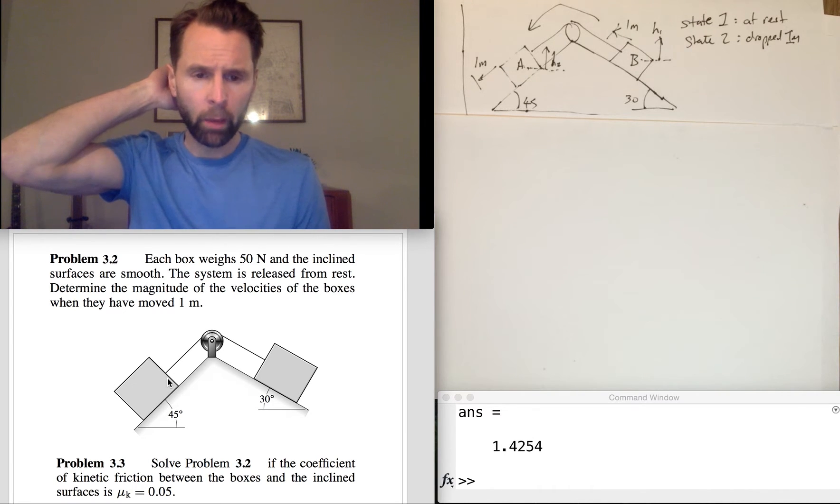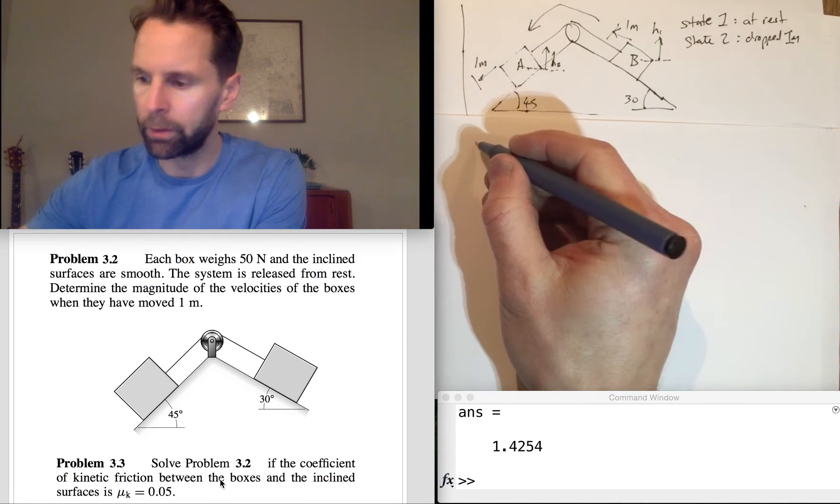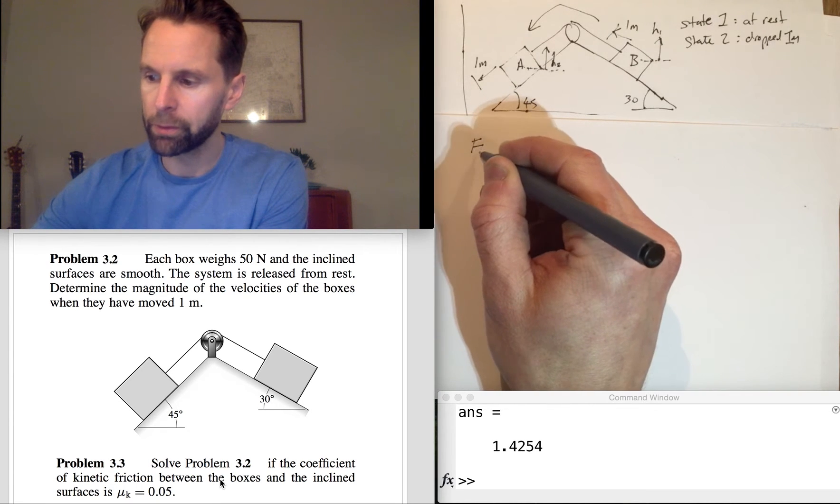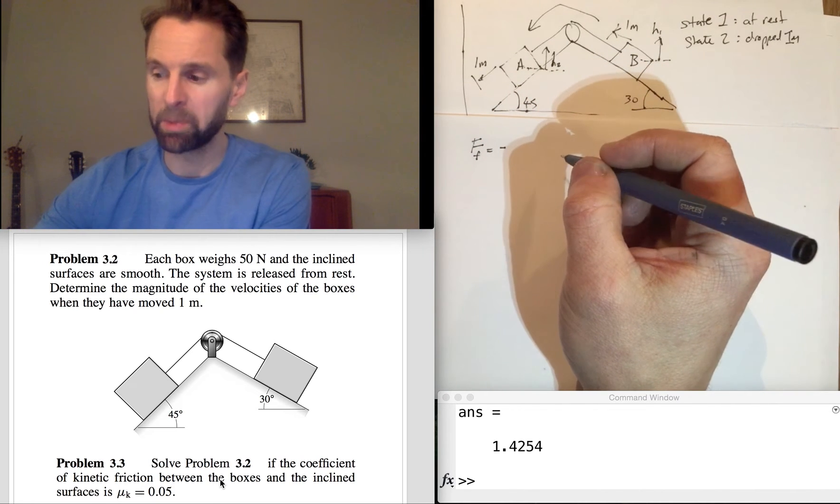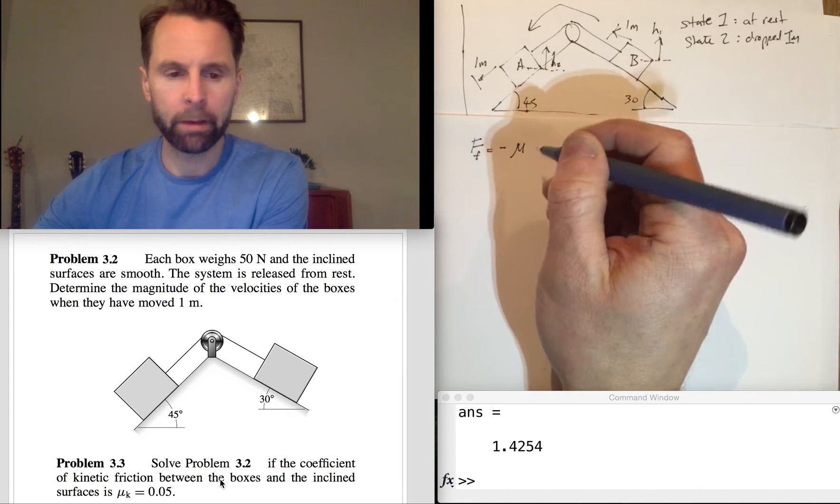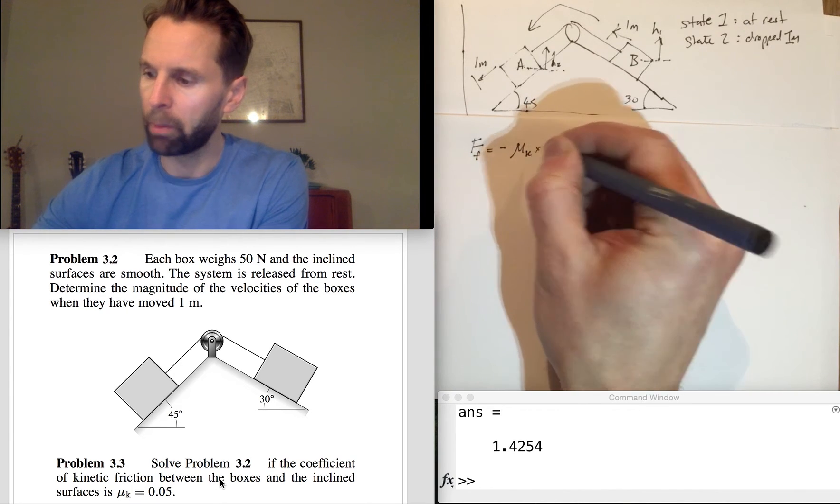But this time in 3.3 it's asking us to consider kinetic friction between the boxes and the inclined surfaces. We know that the friction force is equal to minus, because it's in the direction opposite to motion, the kinetic friction coefficient mu K multiplied by the normal reaction.